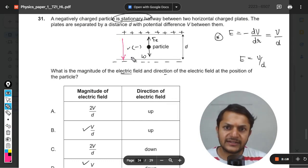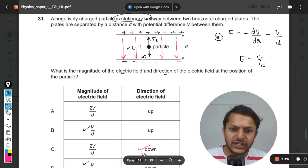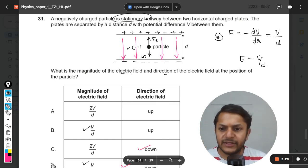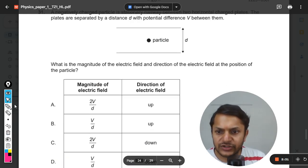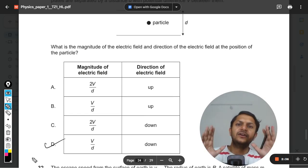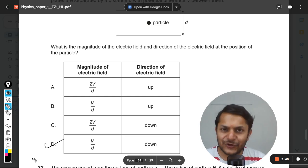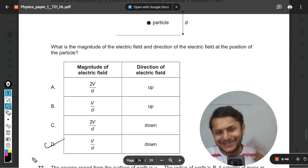It will be like this. It will be like this. The direction of the electric field is downwards. And so I think d will be the correct option. This is how we do this question. This is Professor Varun. Thanks for joining the YouTube channel. All the best. Bye.